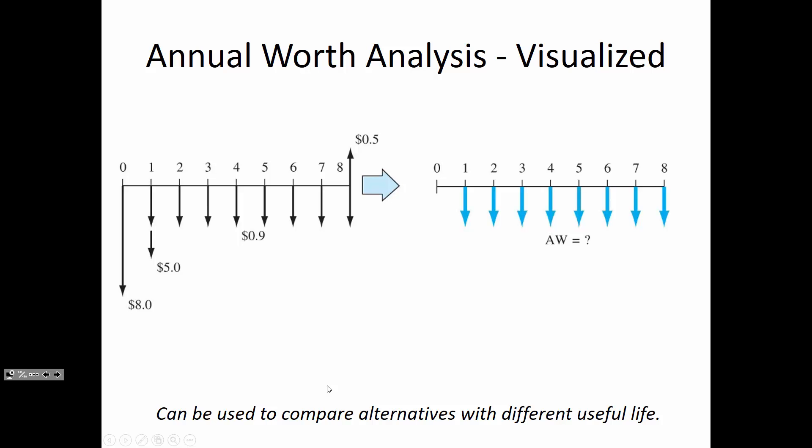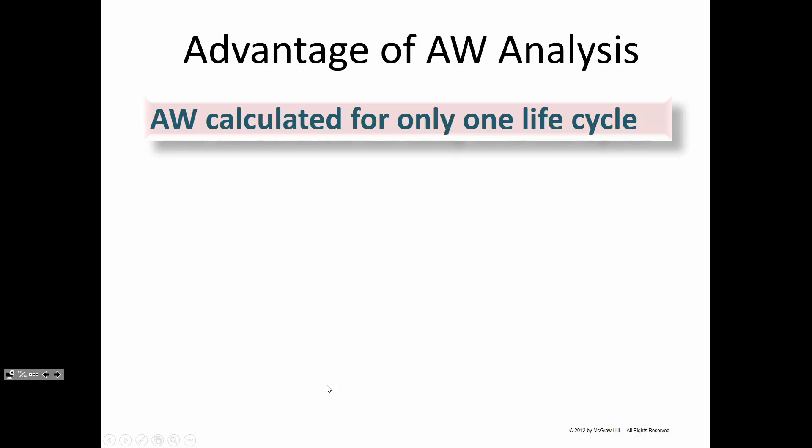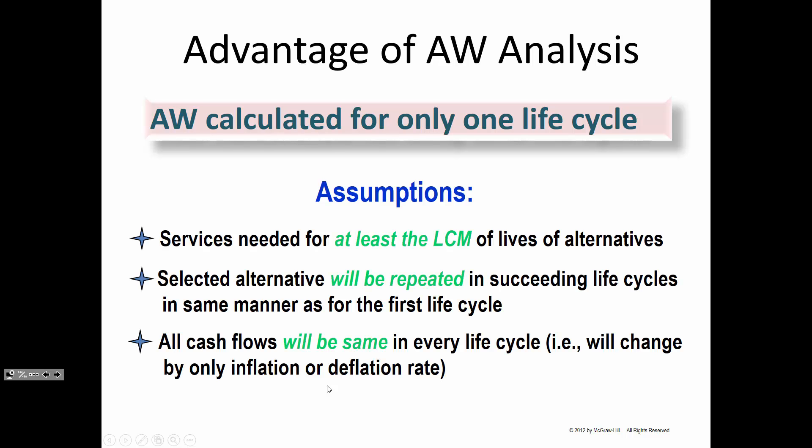We can use the annual worth approach and not have to go through the trouble of those methods. If you find the annual equivalent of two alternatives, you don't have to manually repeat them or early terminate. The advantage is you only have to do one life cycle and you avoid the mistake of placing the repeated purchase in the wrong year — for example, buying the item again at the start of year seven instead of the end of year six.